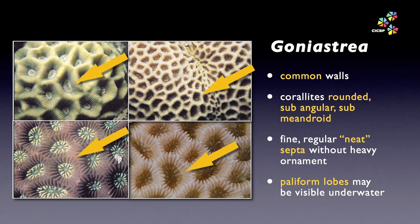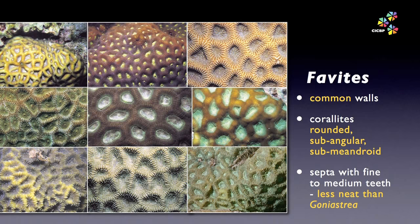Goniastria can be a bit mysterious for the beginner, but its fine, regular, neat sceptre does create a distinctive look — you just need to learn that look. Note that Goniastria is often common in shallow and intertidal habitats and also has some meandering species. Now for Phorvites: when side by side with Goniastria, the differences are usually quite evident but hard to put into words. The lack of paliform lobes and the less neat sceptre are good characters to focus on.